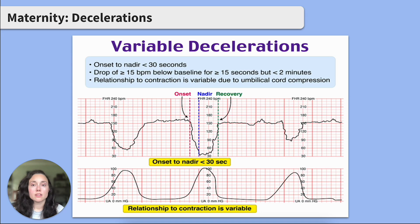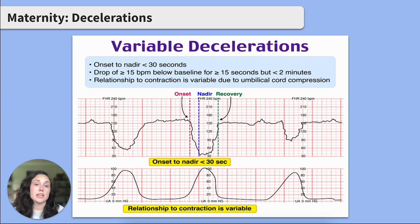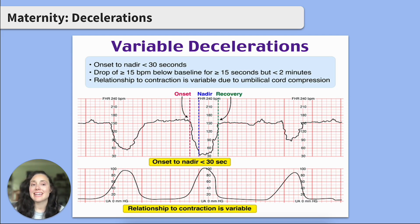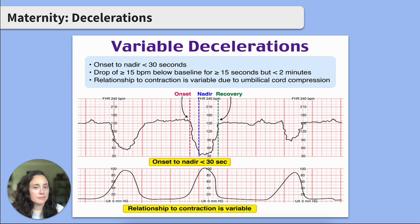Variable decelerations are exactly what they sound like — they vary. These are characterized by abrupt decreases from the baseline heart rate that vary in both shape (where they may resemble a V, U, or W) and timing. A variable deceleration is characterized by decreasing at least 15 beats per minute for at least 15 seconds — so 15 by 15. These are usually caused by umbilical cord compression, so interventions focus on reducing compression on the cord.